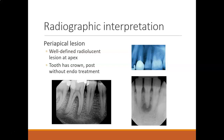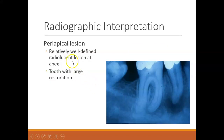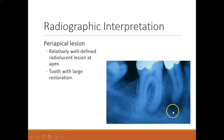Periapical lesions appear as a well-defined radiolucent lesion at the apex. Here are a couple good pictures with really well-defined radiolucencies at the apex. This tooth has a crown and a post but no endodontic treatment, and you can see radiolucency at the apex of this anterior tooth. These are other examples of well-defined radiolucent lesions at the apex — some with really large restorations, some pretty well-defined, and others showing just widening and not as well-defined.